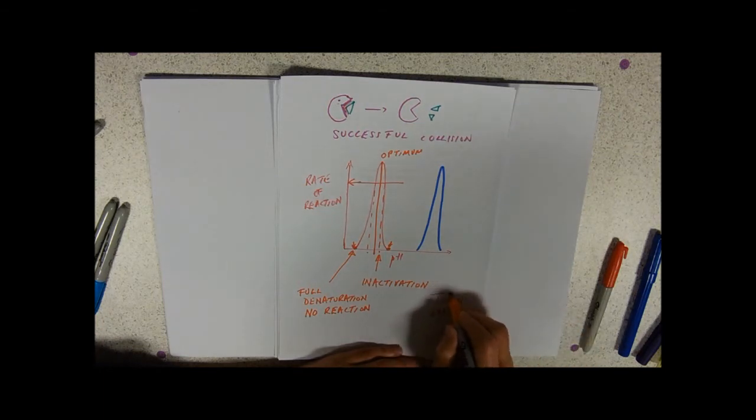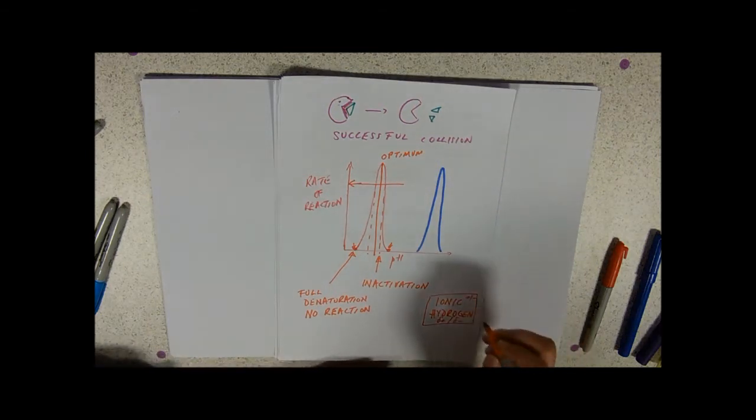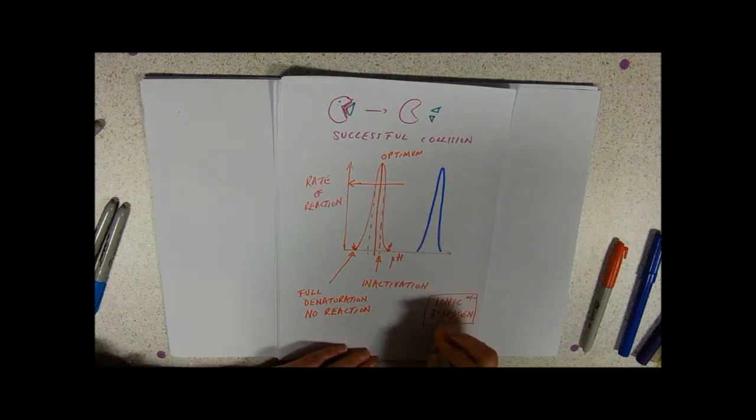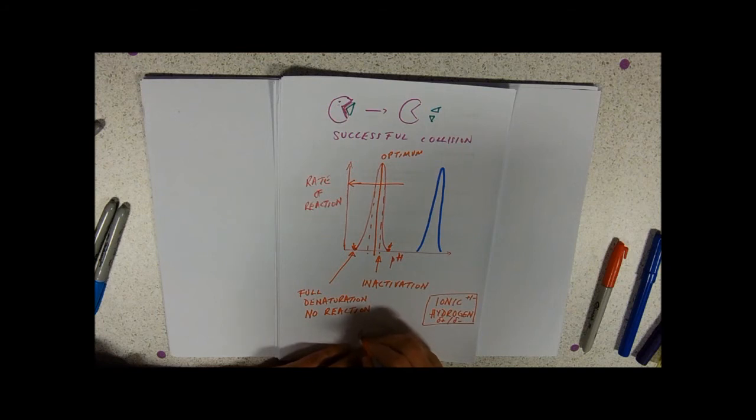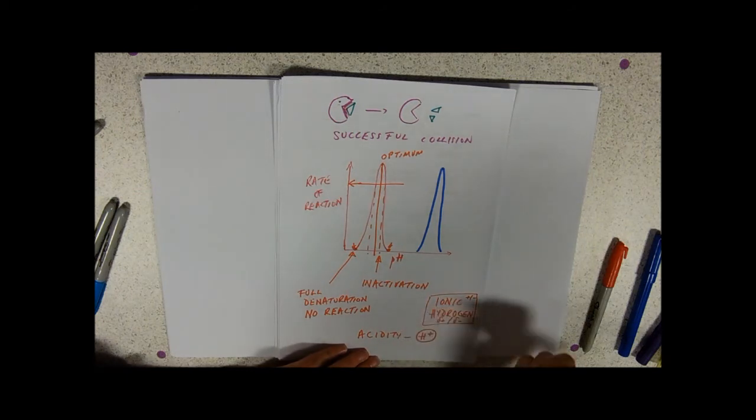So these ones that rely on either having a plus or minus, or a delta plus or a delta minus, might be disrupted by pH, because what causes acidity, particularly, is the concentration of hydrogen ions.